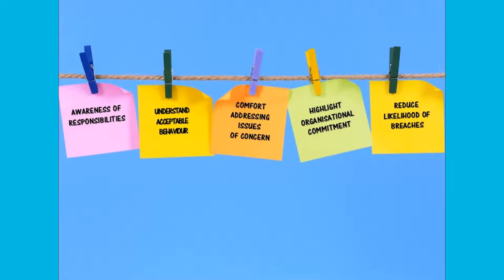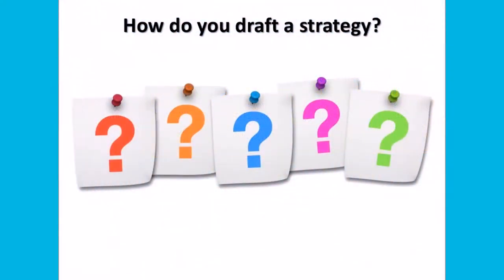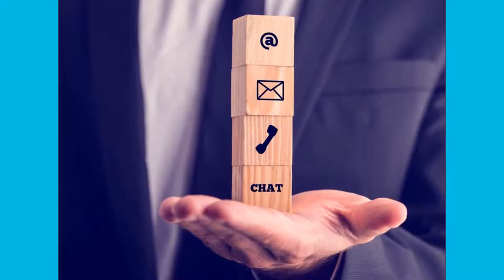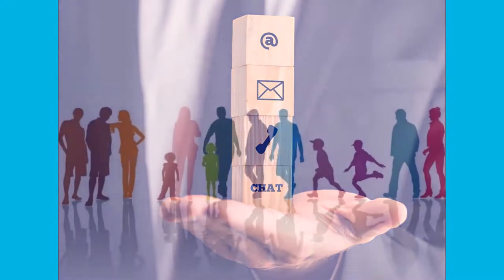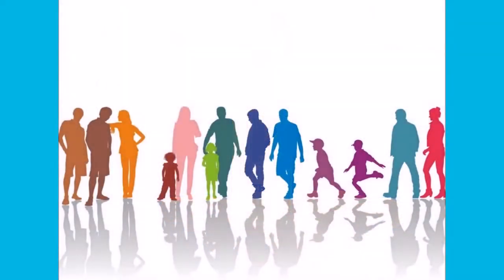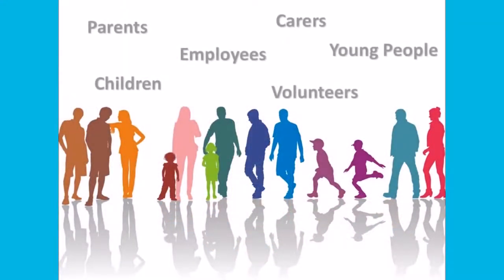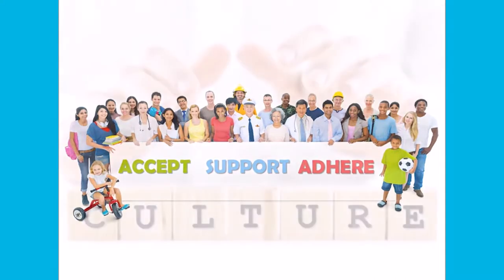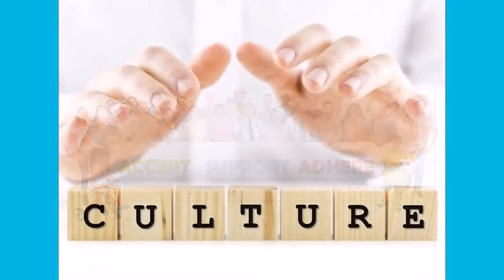So how should you go about drafting this strategy? A good place to start is to consider what methods of communication and support are suitable for your organization, and involve people in your organization in developing them. If parents, carers, employees, volunteers, children, and young people are actively involved in developing your organization's policies and procedures, they will be more likely to accept support and adhere to them.